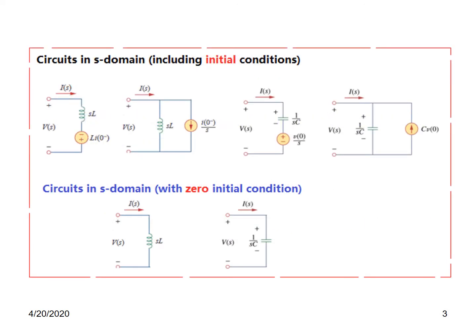We also recall that the circuit in S domain including initial conditions has two possibilities for the inductor circuit and two possibilities for the capacitor circuit. When the initial condition is zero, this becomes very simple: the inductor just becomes SL, and the capacitor becomes 1 over SC, since the other terms become zero.